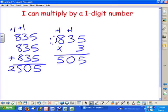We've got the invisible 0. Put the 2. 0 times 3 is 0, plus 2 is 2. So there you go. That's how you multiply by a 1-digit number.